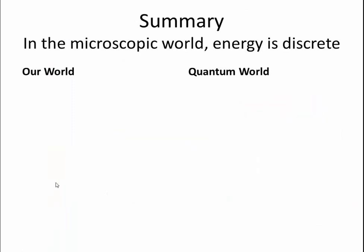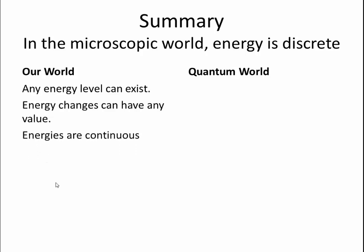So to summarize, in the microscopic world, energy is discrete. In our world, any energy level can exist. Energy changes can have any value, which means energies are continuous, and output energies are continuous.